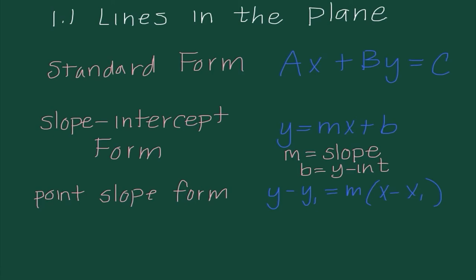Working backwards, if we look back at Standard Form, our slope is the opposite of A over B, and our Y-intercept is C divided by B. So you can see why we will often tend to isolate Y instead, so it's easier for us to find the slope and the Y-intercept really easily.